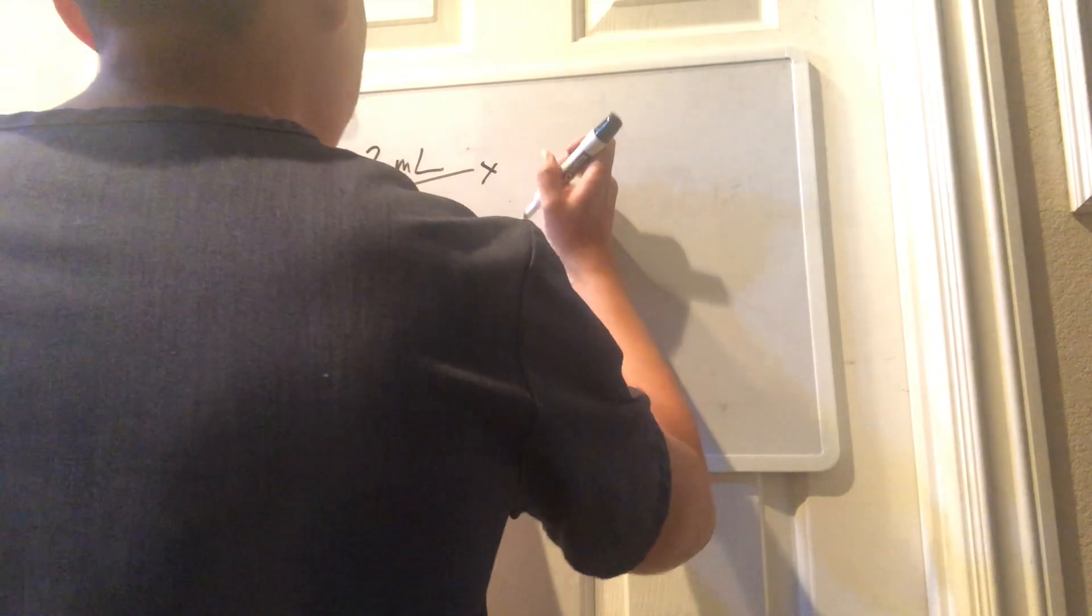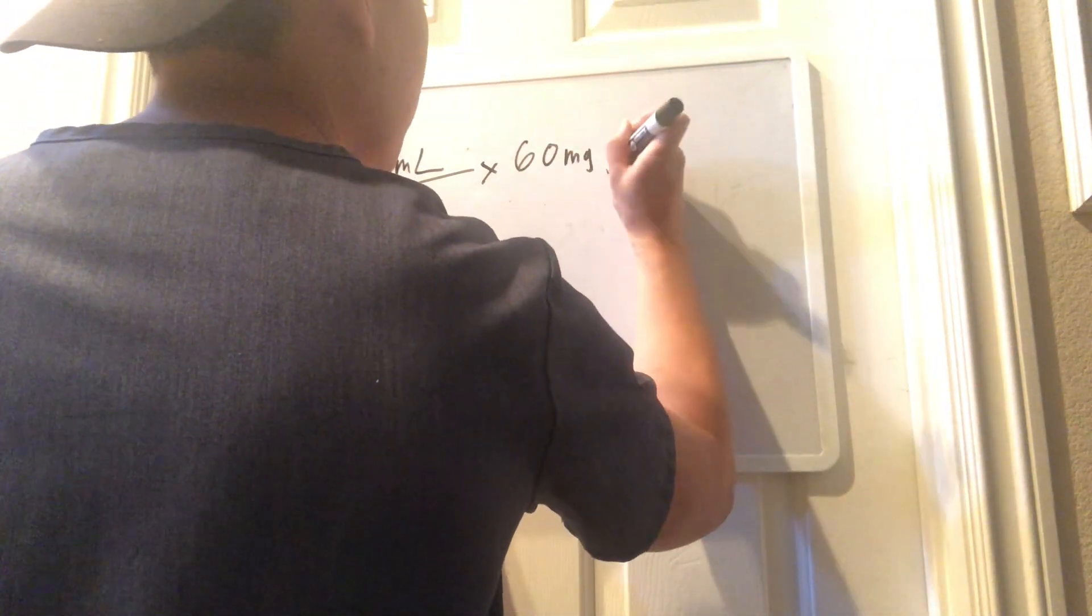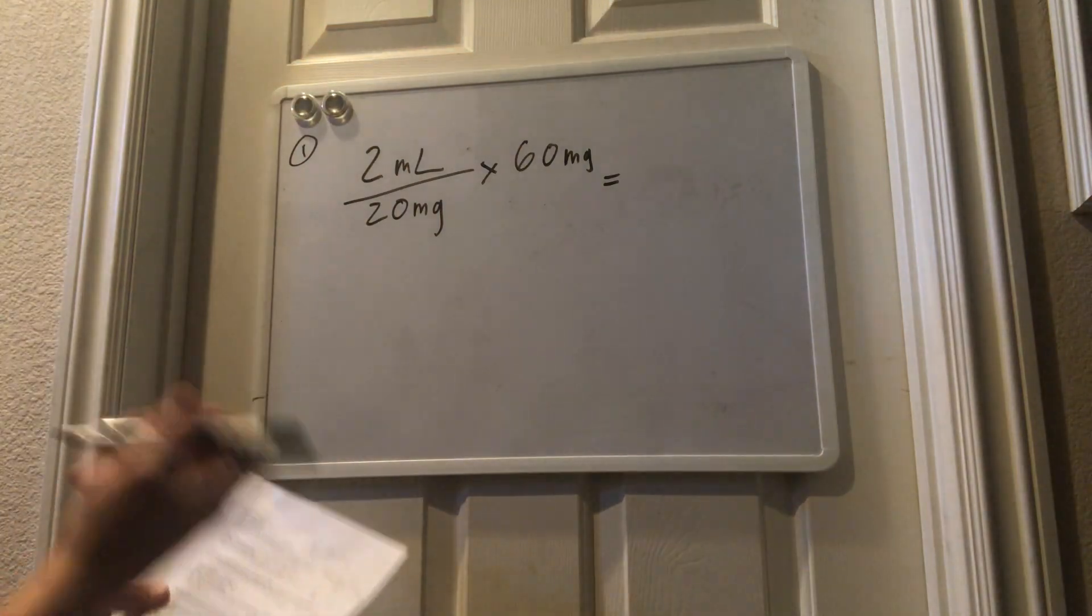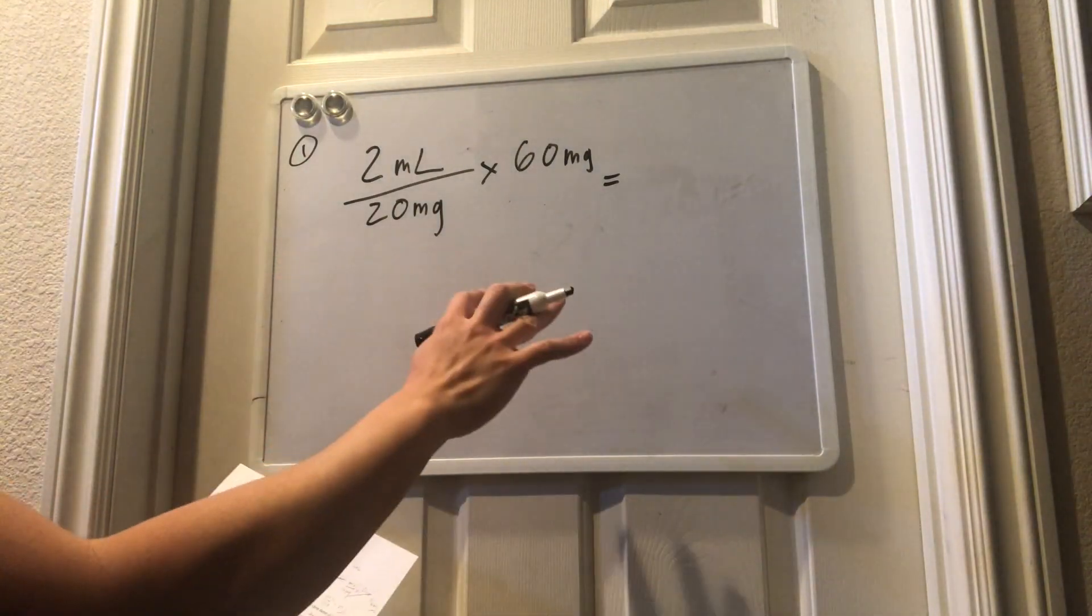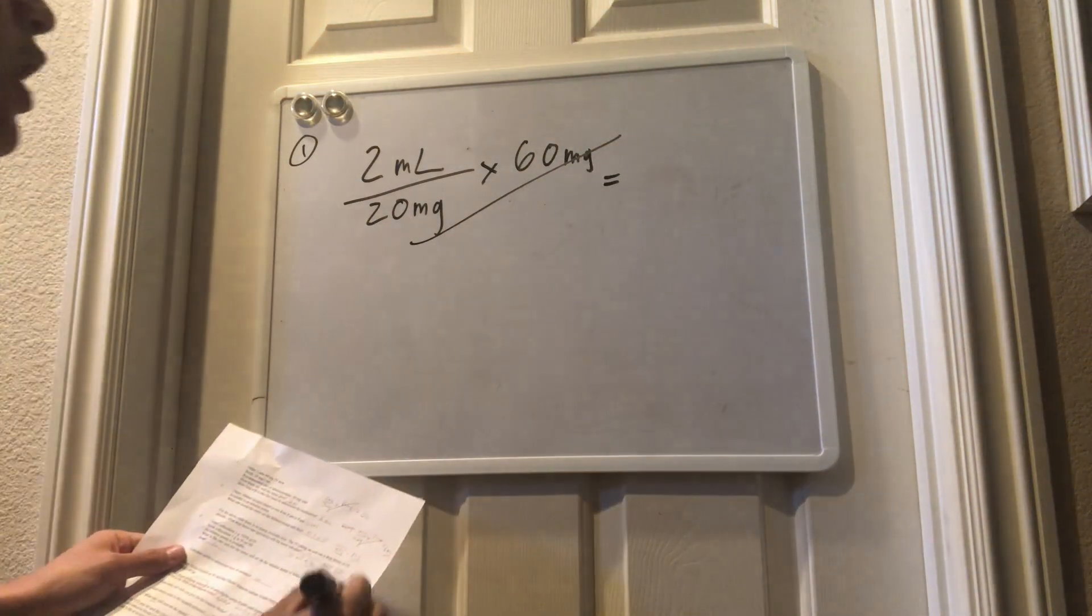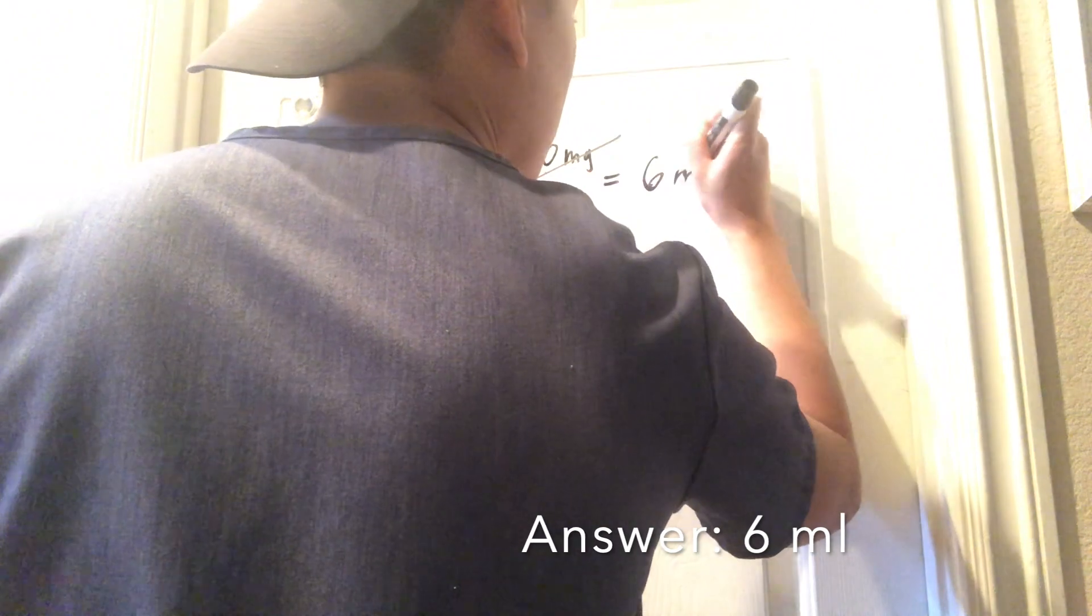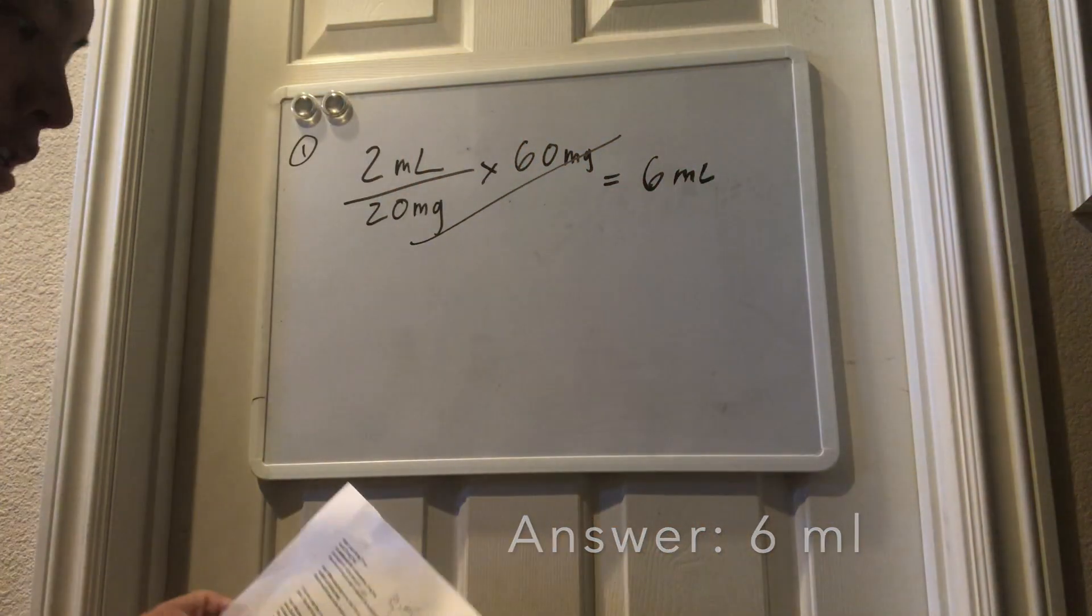And we take the order, the 60 milligrams of Lasix, and we set it up like this. Now, reason being we set it up like this is so we can visualize the calculations. We can go ahead and cross off the milligrams, and when we calculate the problem, you should be getting 6 cc's.